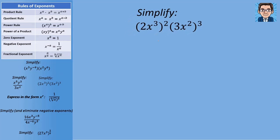The next problem involves taking things to a power, and we have two things in each parenthesis. In the first part, 2 and x to the 3rd are both taken to the second power. So 2 squared gives us 4, and x to the 3rd to the second power — we multiply exponents — gives us x to the 6th. For the second piece, 3 to the 3rd power gives us 27, and x to the 2nd to the 3rd gives us x to the 6th. Now multiplying: 27 times 4 is 108. And x to the 6th times x to the 6th — we add exponents — gives us x to the 12th.